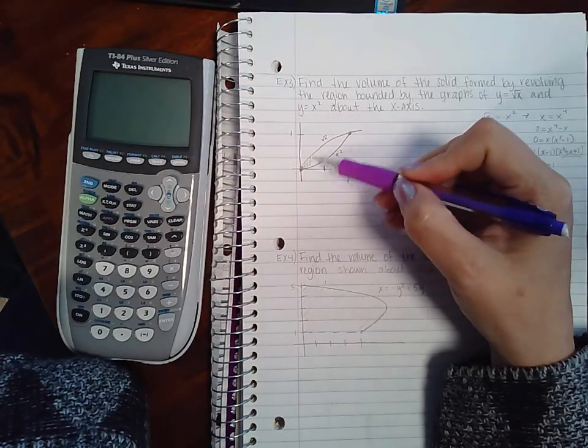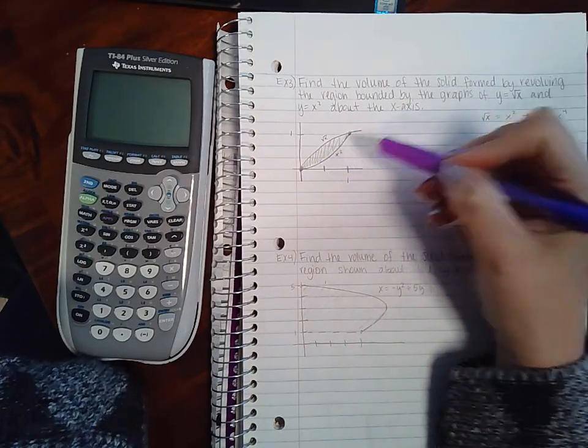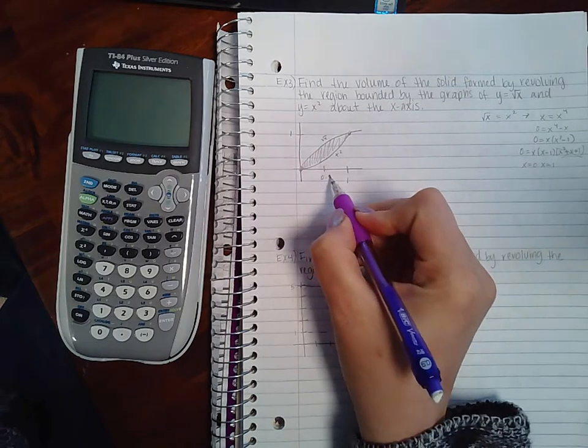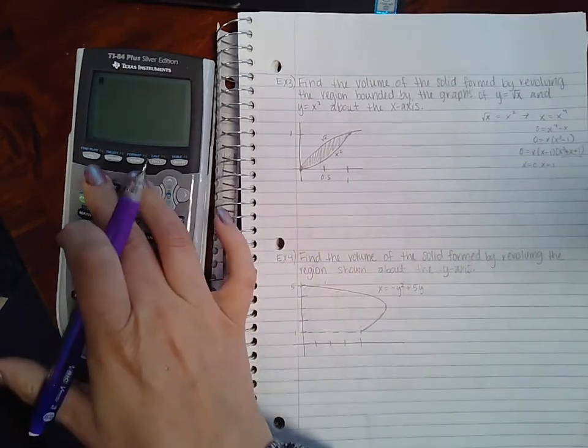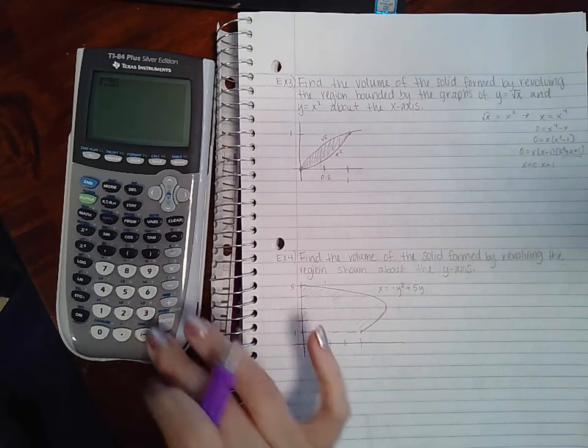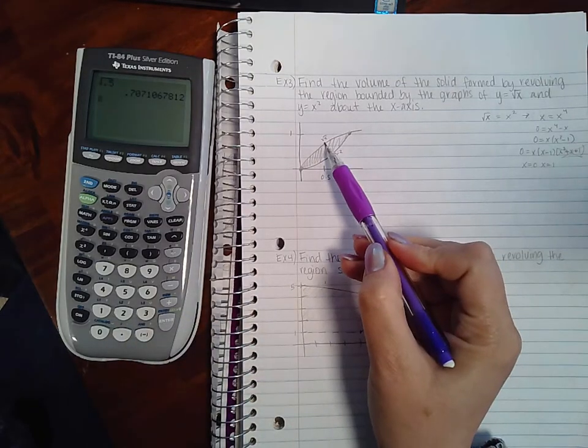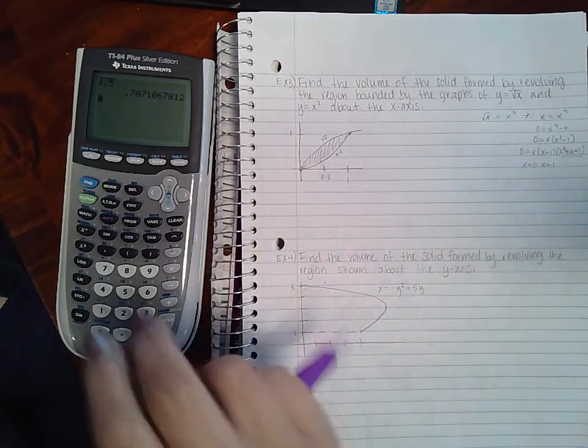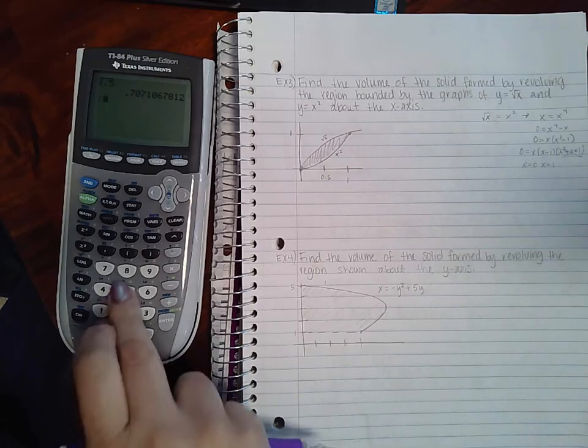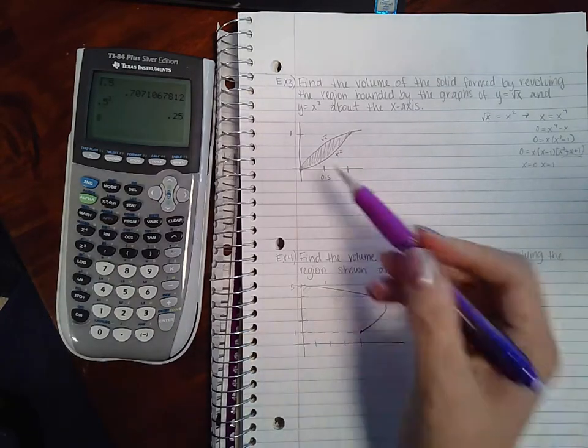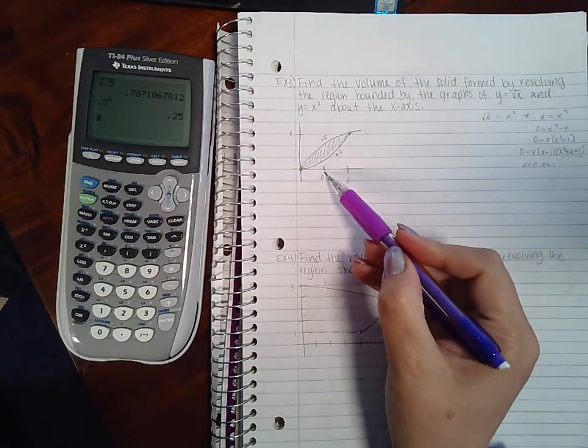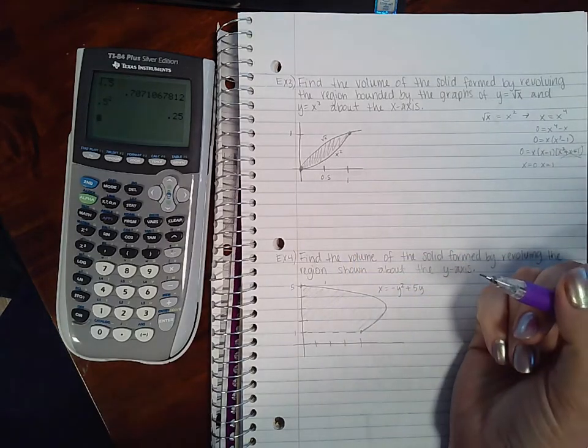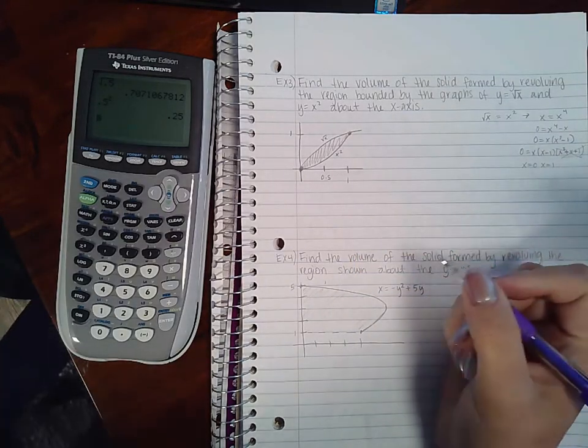If you want to verify, you could use a number like 0.5 and then take the square root of 0.5, you get 0.7, which is probably closer to one. And then if you square 0.5 you get 0.25, which is going to be closer to zero. So the graph does match the actual y values that we would receive if we plugged in 0.5 as well.